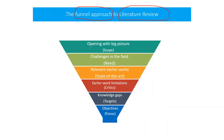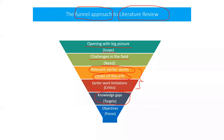So what is the final approach? You start with a bigger picture, tell your scope and importance, followed by the challenges in your research field. In order to justify that, you need to list all the relevant earlier works, which is called state of the art. Then you summarize the earlier limitations. Sometimes these are entangled. Then you narrow down the knowledge gaps, the targets of your research, and further down the focus of your work.